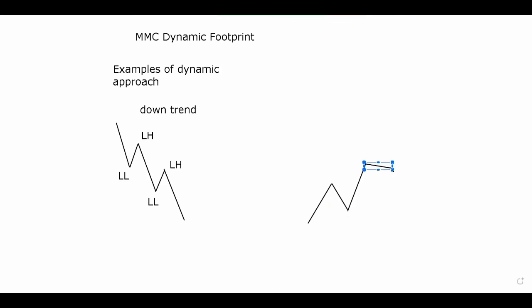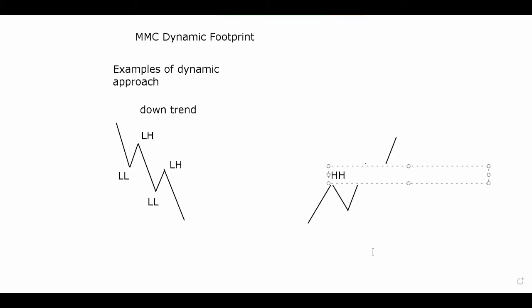On an uptrend it's different - we have a higher high and a higher low. What confirms a lower low and lower high, or a higher low and higher high, is when the market breaks the previous turning point. If it does not break a previous turning point, it is not yet confirmed. We only confirm when it surpasses the previous high or low. This is a higher high and this is a higher low.